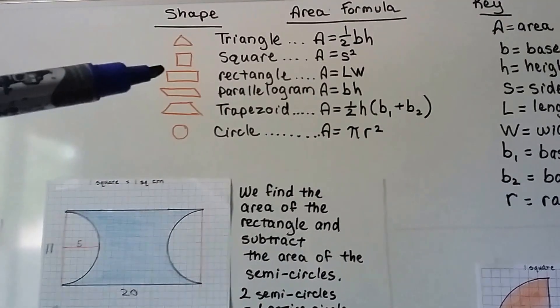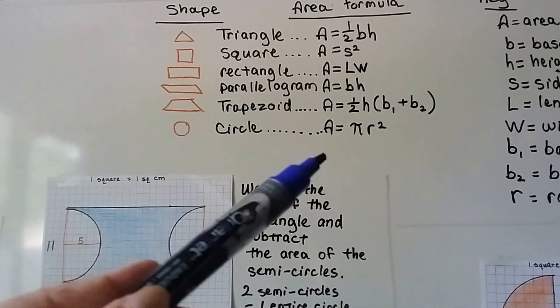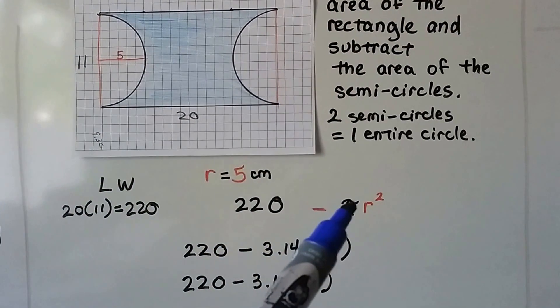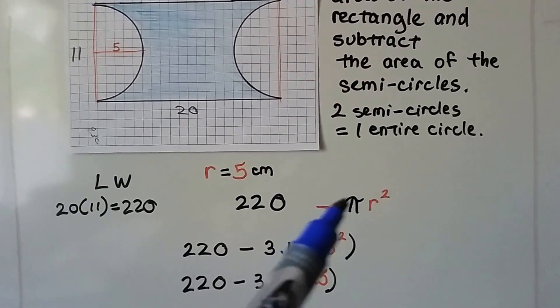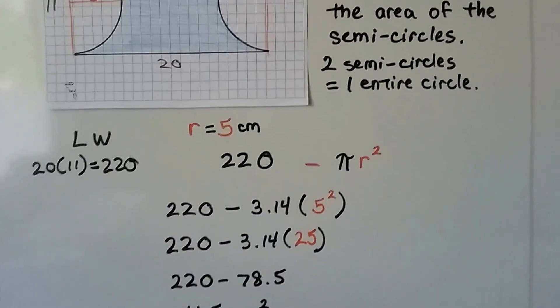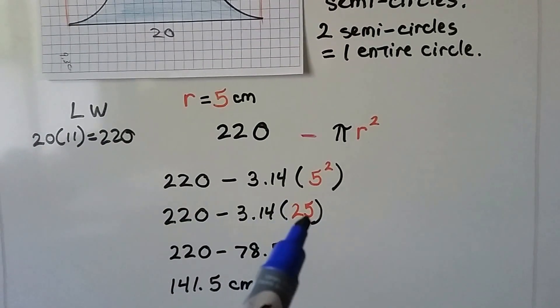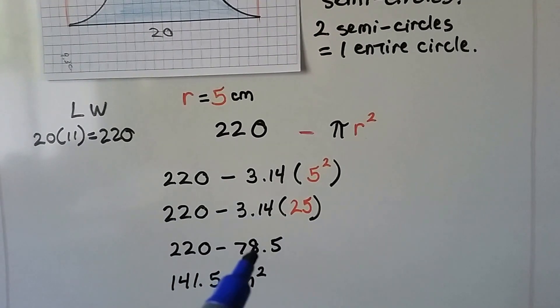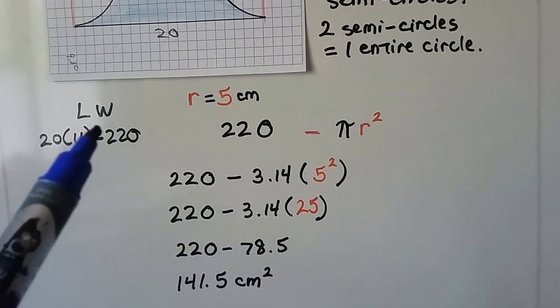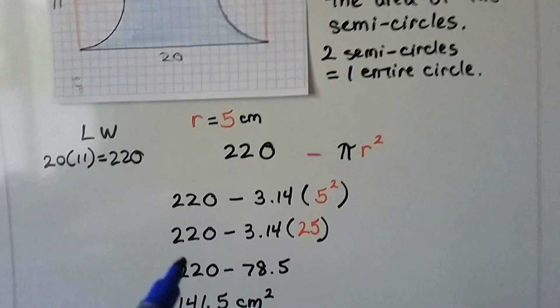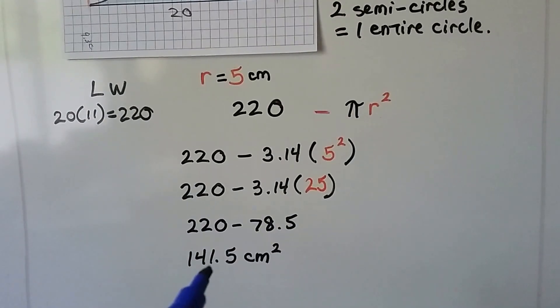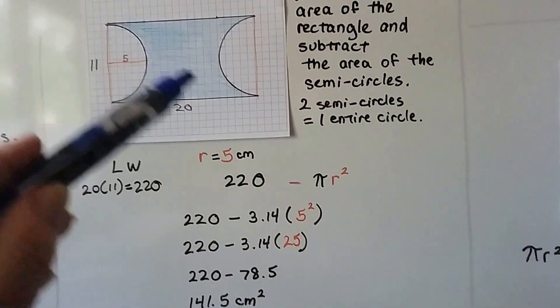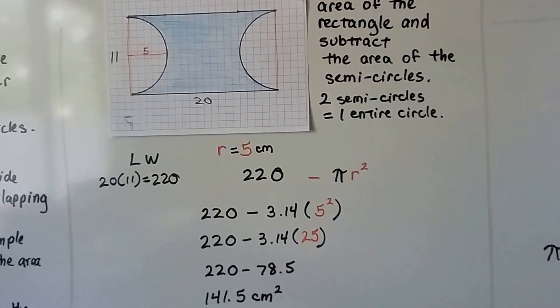To find the area of a rectangle, we did length times width. To find the area of a circle, we do πr². So we need to multiply π times 5 squared and subtract it from the 220. 5 squared is 25, we multiply that by 3.14, we get 78.5. We subtract it from that big rectangle and we get 141.5 centimeters squared.